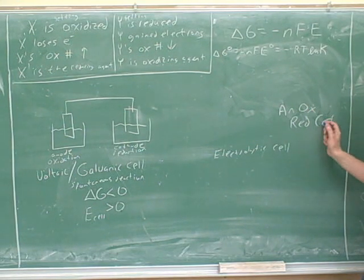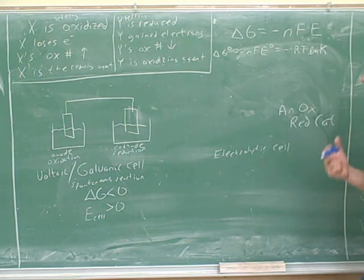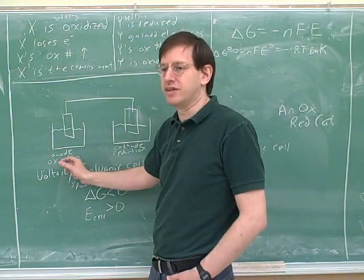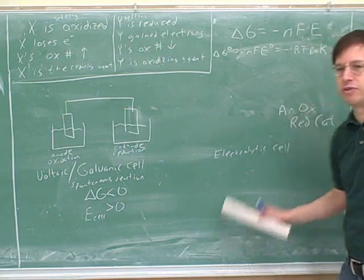The reason those are good mnemonics is that they're always true for any types of cell. For any type of cell, the cathode is the site of reduction, and the anode is the site of oxidation. So those mnemonics will always give us the right answer.